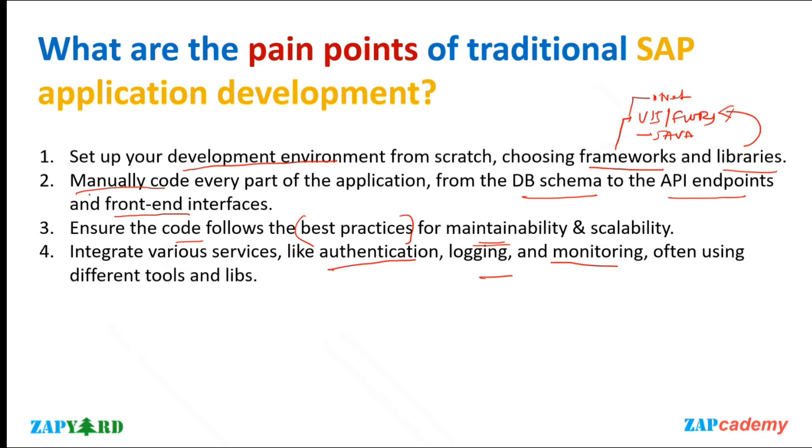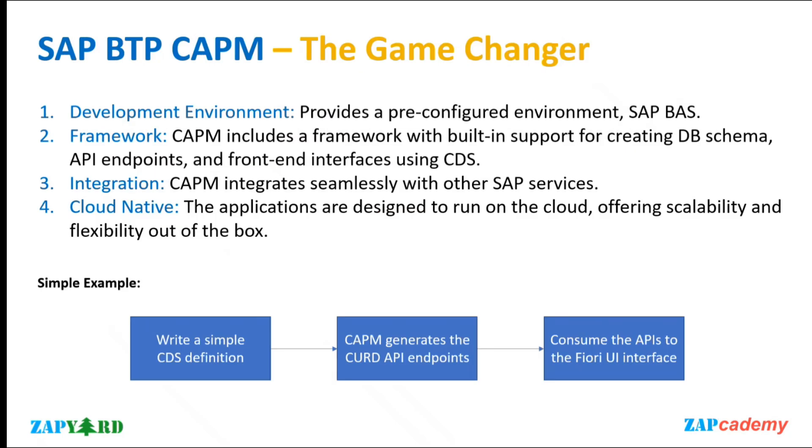Every step is very important and it's a pain point for traditional application development. You also need to think about the authentication mechanism, the monitoring section, logging, and everything. This is a common problem for every application development. So how is CAPM solving this problem?